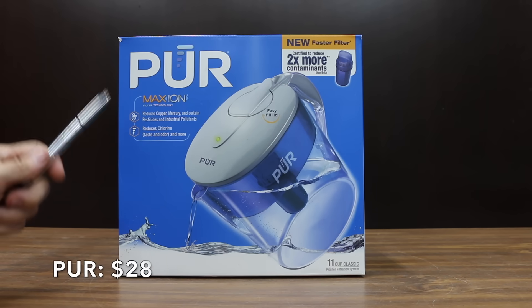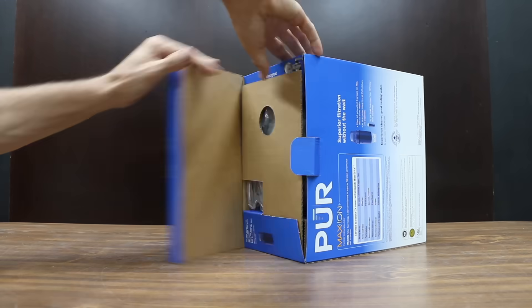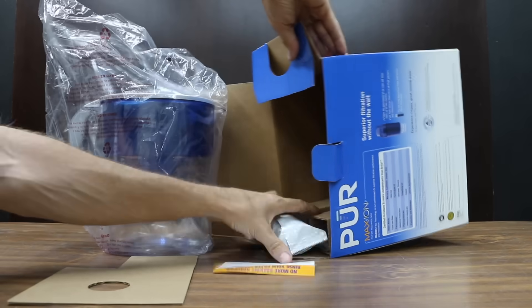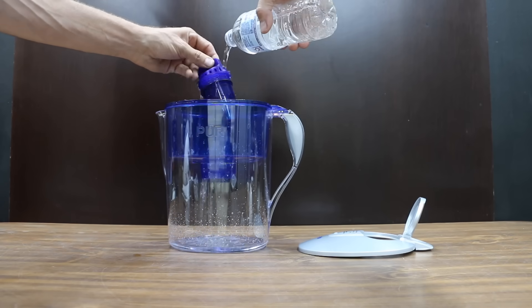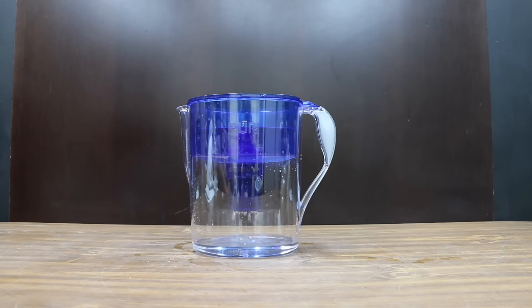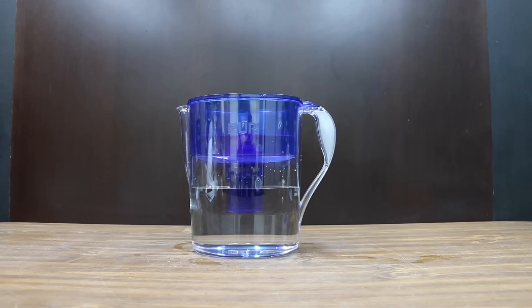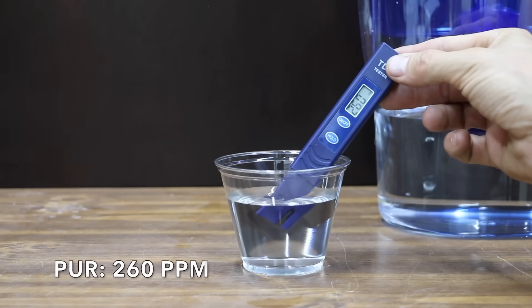At a price of $28 is this Pure brand. Reduces heavy metals, mercury, cadmium, copper, and zinc. 11 cup capacity. The Pure filter is made in Mexico. The pitcher is made in USA. Rinse the filter under running water for 15 seconds. Insert filter and twist to lock. Fill pour tray with water. It is normal for carbon dust to appear in your first pitcher. Discard and refill. 260 parts per million for the Pure brand.